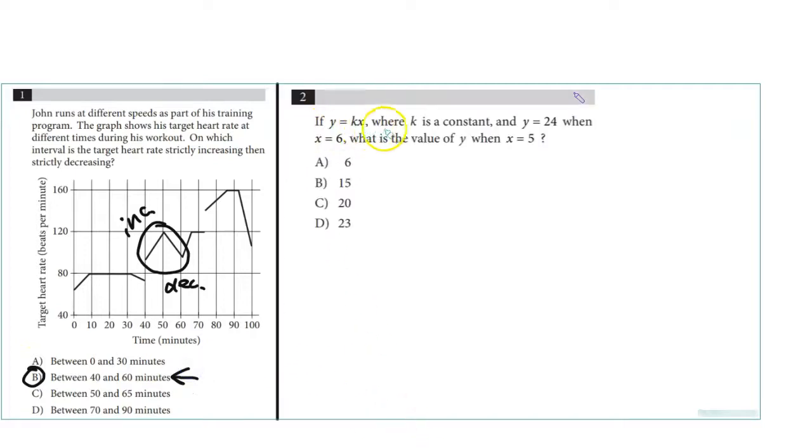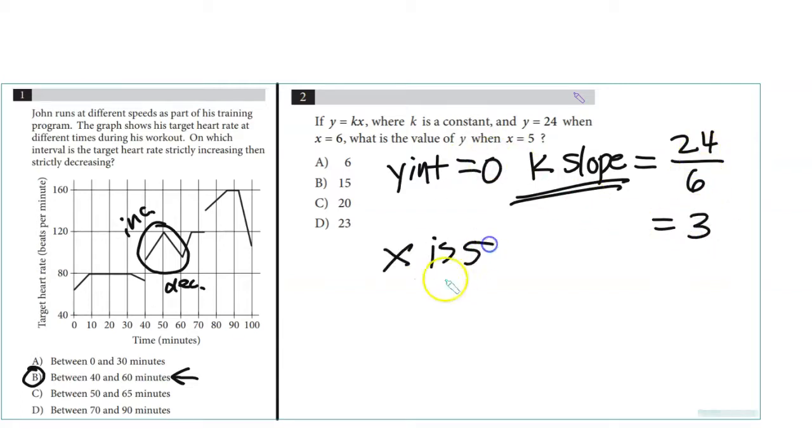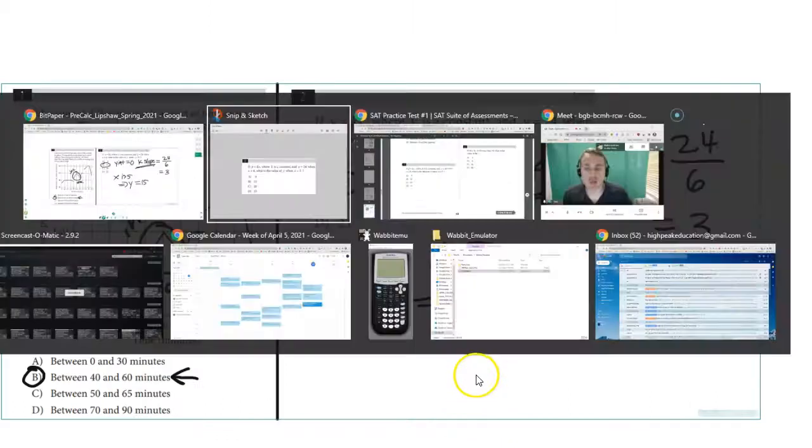Number 19: If y equals kx and k is a constant, and y is 24 when x is 6, what's the value of y when x equals 5? The y-intercept equals 0, so k is the slope. Notice the slope is rise of y, which is 24, over the run of x, which is 6. 6 goes into 24 three times. If x is 5, then y should be 15, because we're going to rise 15 while we run 5.